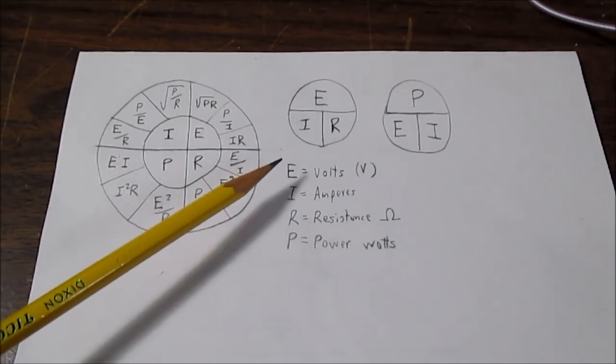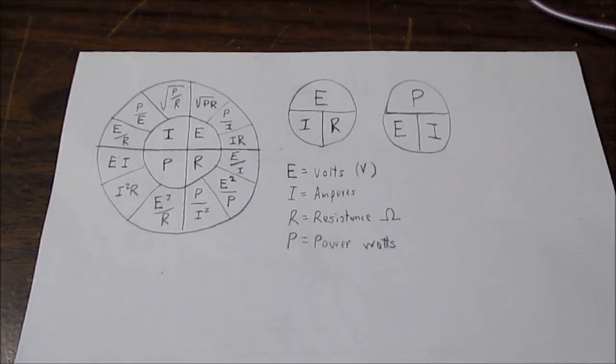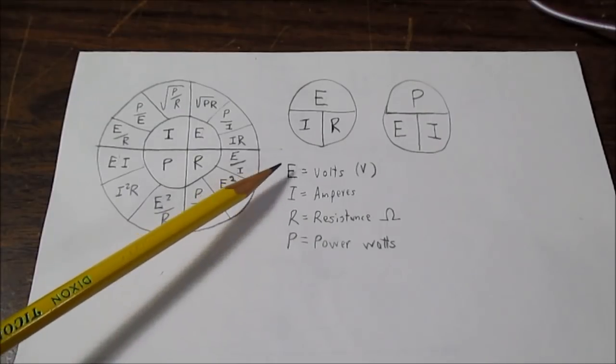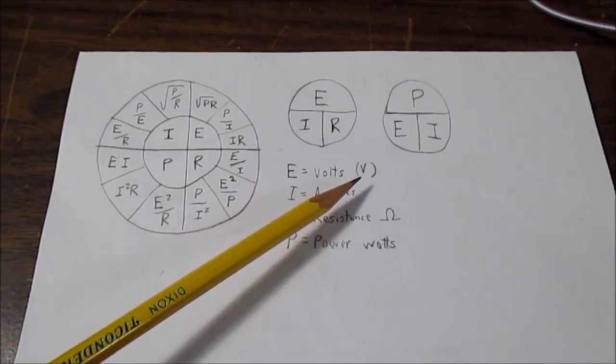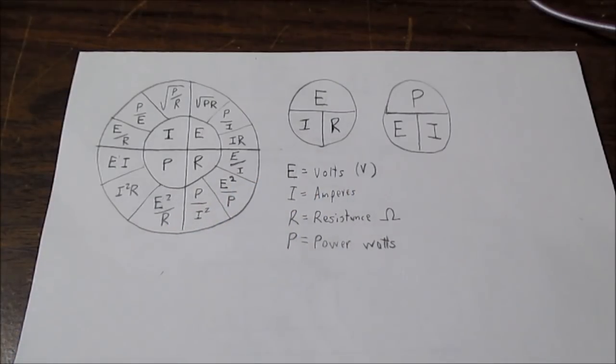Well first off I need to define the variables I'm going to use. And I'm going to use the classical method, in other words the variables that were used classically. And in that case, E was used for volts. E means electromotive force, so that's where that comes from. I for amperes.